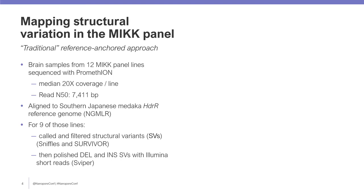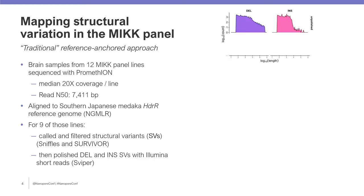We first applied the traditional reference-anchored approach of mapping SVs by taking 12 MYK panel lines, sequencing them with PromethION, aligning them to the standard medaka HDRR reference, and then for nine of those lines, calling SVs and polishing the deletions and insertions with high coverage Illumina short reads. Here we have the log10 lengths and counts of all the called deletions and insertions, and you can see that the polishing process removed insertions over 10 KB in length, as well as adjusting the breakpoints for around three quarters of the variants, which highlights the utility of this combined long and short read approach if mapping accuracy is paramount.